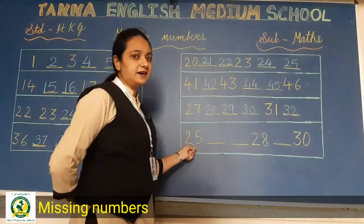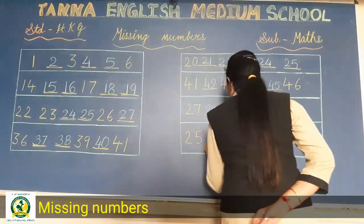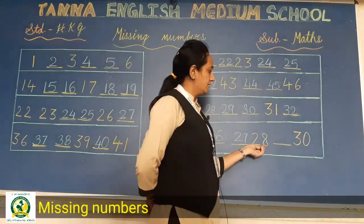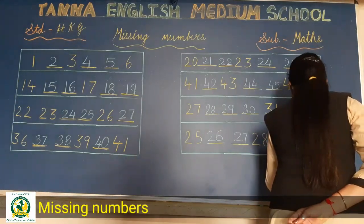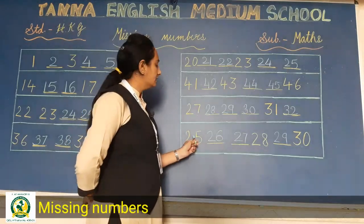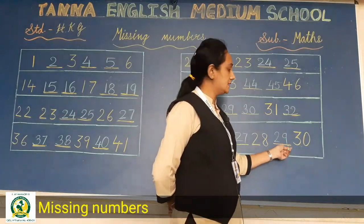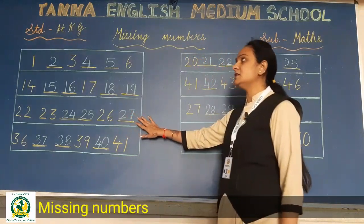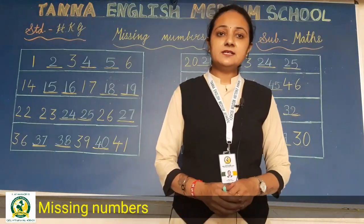Now 25 is written. What will come after 25? 26, 27. Now 28 is written. So what will come after 28? 29, and 30 is written. So here also we complete this line: 25, 26, 27, 28, 29 and 30. Okay students, so this you have to complete in your maths CW book and HW book. Okay students, thank you.